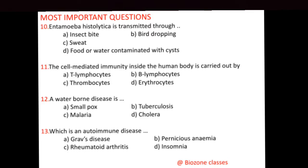Question number 10: Entamoeba histolytica is transmitted through — insect bite, bird droppings, sweat, or food/water contaminated with cyst. The correct option is D. When food or water is contaminated with cyst, it transmits the infection of Entamoeba histolytica.